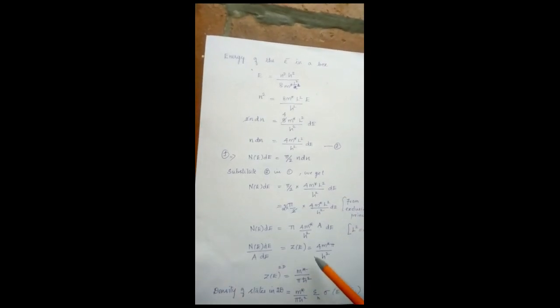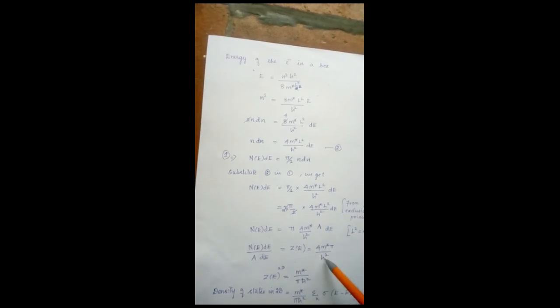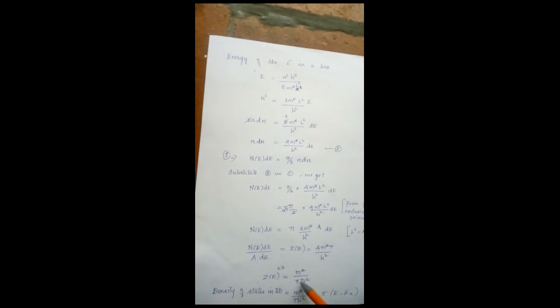So, the density of states in 2 dimension is written as m star by pi h square. Here, h is replaced by h cross. That is why pi is present in the denominator. So, the density of states in 2 dimension is written as m star by pi h square summation n sigma E minus En. Thank you, everyone.